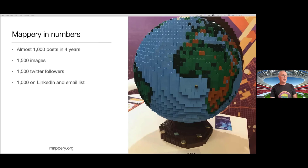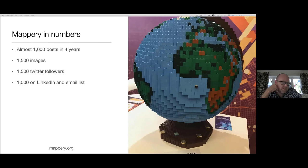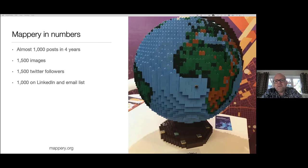Just in case you hadn't noticed, the Lego globe was one of Ken's creations. He brought it along to BCS at the London Mapping Festival. It's designed by a German guy called Dirk — you can actually download the plans for that globe if you wish, although Lego have brought out a globe now.